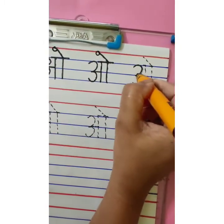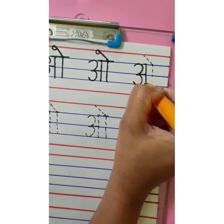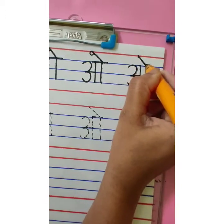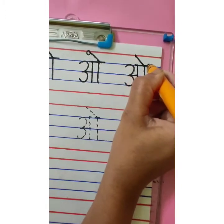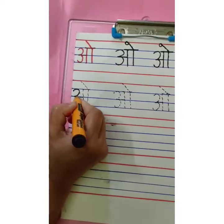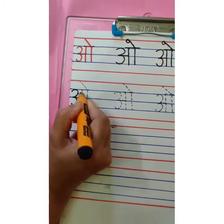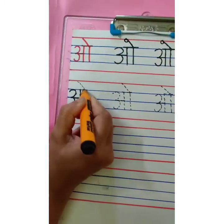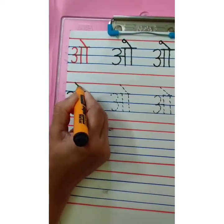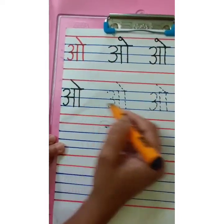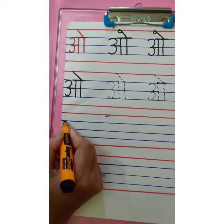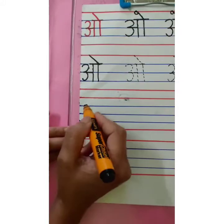Number 3, sleeping line, standing line, one more standing line, overhead small sleeping line — this is O. Number 3, sleeping line, standing line, one more standing line, overhead sleeping line and matra — O. This way you are going to complete these two rows, and then the remaining rows you are going to write independently.